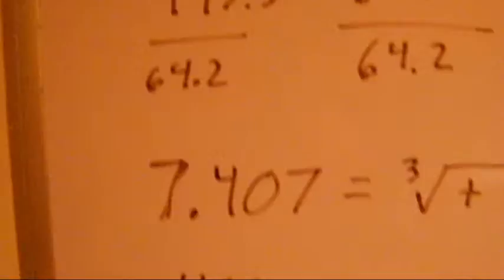Which then we divide out on both sides, which brings us to 7.407 equals the cube root of t, which brings us to 406 years old. That is one old elephant.